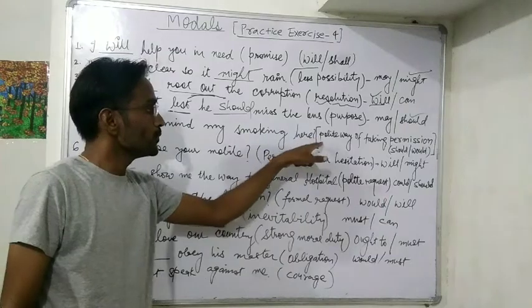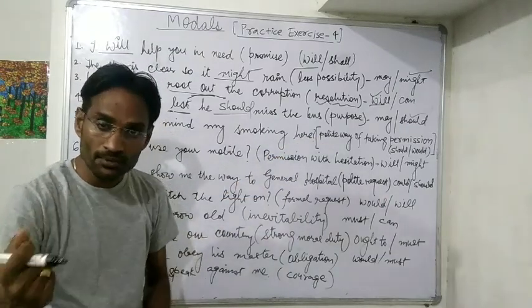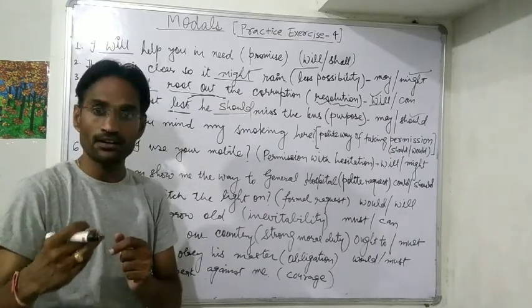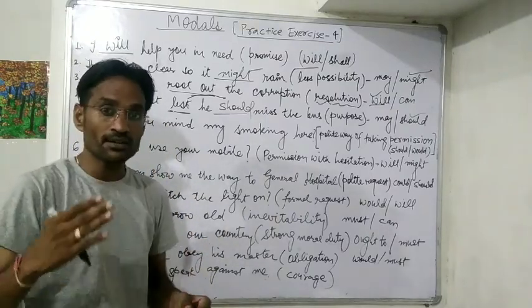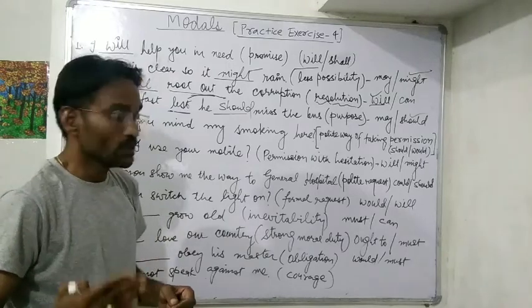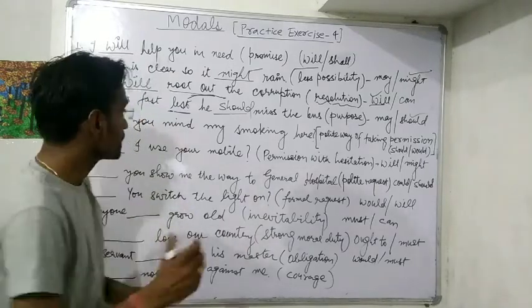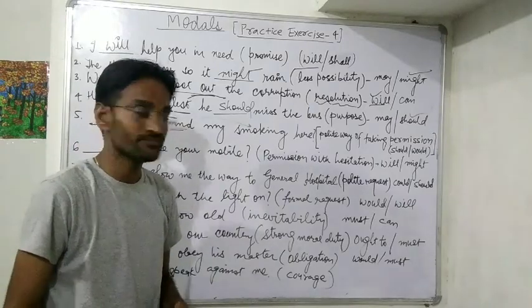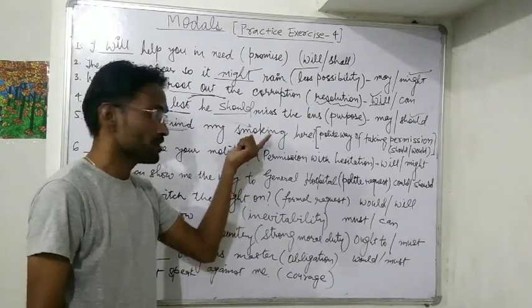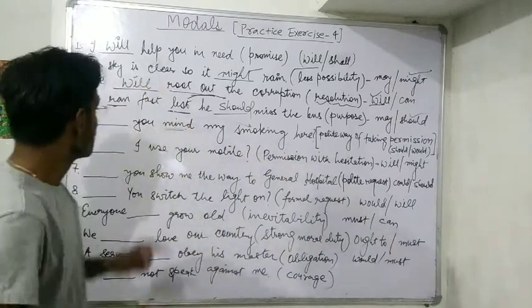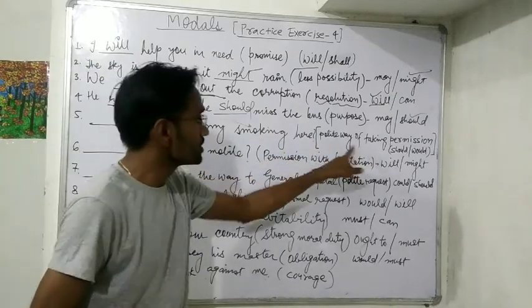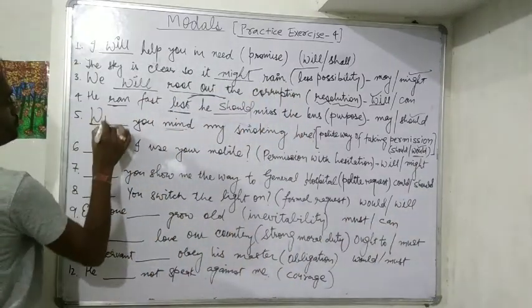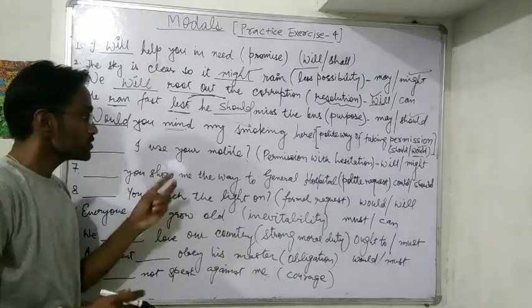Next: 'You mind my smoking here?' — polite way of taking permission. You are asking for permission from somebody in a very polite and somewhat formal way. Note that 'mind' is followed by a gerund (V1+ing). For this kind of polite permission, we use 'would.' Answer: 'Would you mind my smoking here?'